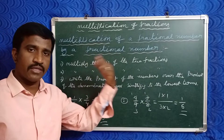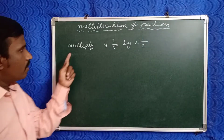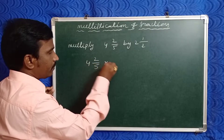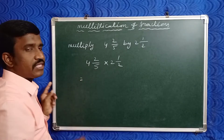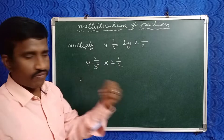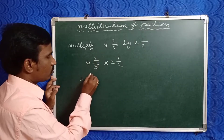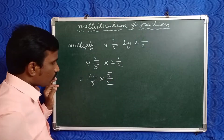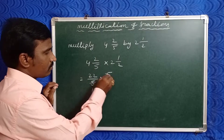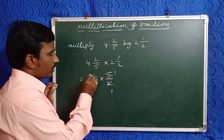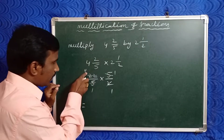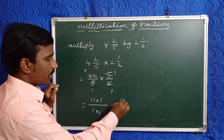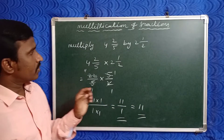Now take one more example: multiply four and two by five with two and one by two. These are mixed fractions, so convert them into improper fractions. Four and two by five: four fives are twenty, twenty plus two is twenty-two, so twenty-two by five. Two and one by two: two twos are four, four plus one is five, so five by two. Cancel five and five: five ones are five. Two and twenty-two: two elevens are twenty-two. Remaining numerators: eleven into one is eleven, denominators: one into one is one. So the answer is eleven.